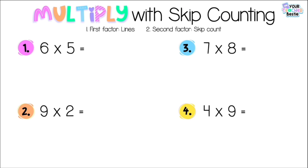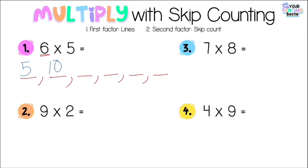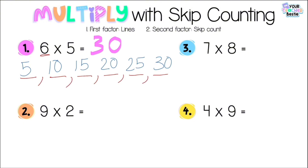For number one, we have six times five. The first factor tells us how many times you're going to be skip counting — in this case, six times. So I'm going to draw six lines: one, two, three, four, five, six. The second factor tells us what we're skip counting by — in this case, five. So I start with five, then ten, fifteen, twenty, twenty-five, and thirty. So six times five is equal to 30.